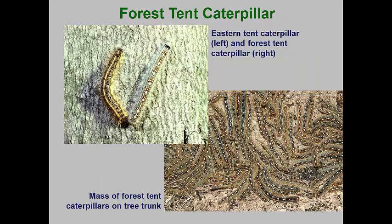A common caterpillar often confused with the gypsy moth is the forest tent caterpillar. This species doesn't make the silk tent that other species make, even though it is in the same genus as the rest of the tent caterpillars. The forest tent caterpillar can have periodic outbreaks in forests as well as in urban landscapes, especially near woodlots. Forest tent caterpillars have a series of keyhole-shaped spots down the back, while the true eastern tent caterpillar has a solid stripe down the back.